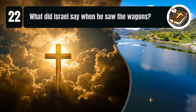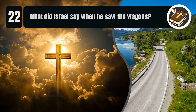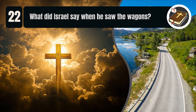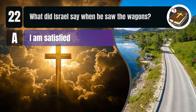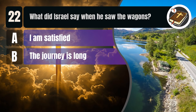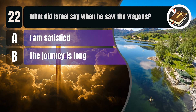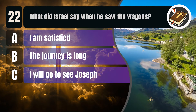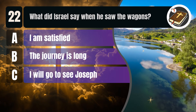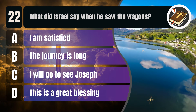Question 22. What did Israel say when he saw the wagons? A. I am satisfied. B. The journey is long. C. I will go to see Joseph. D. This is a great blessing.